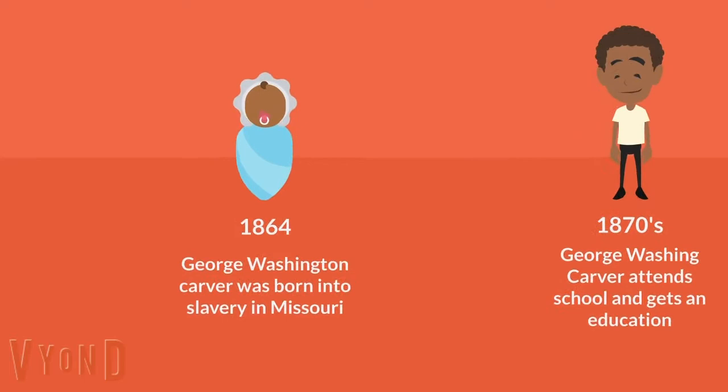George was born in Missouri in 1864. This was a difficult time for many black people because slavery was still allowed in the United States.